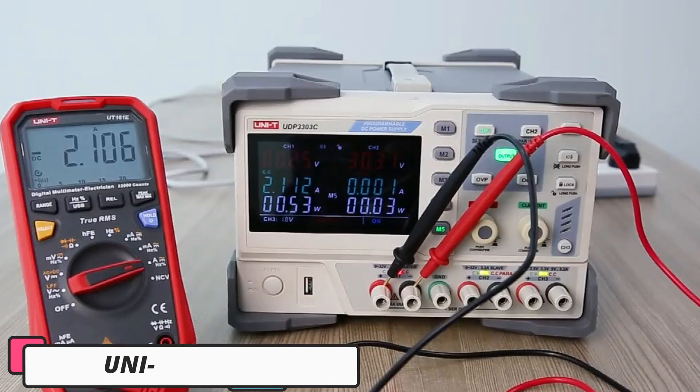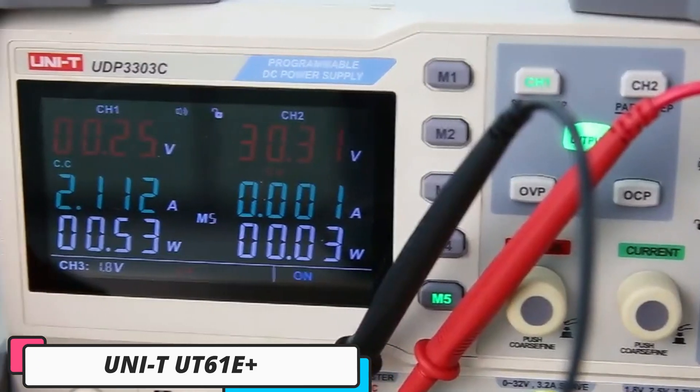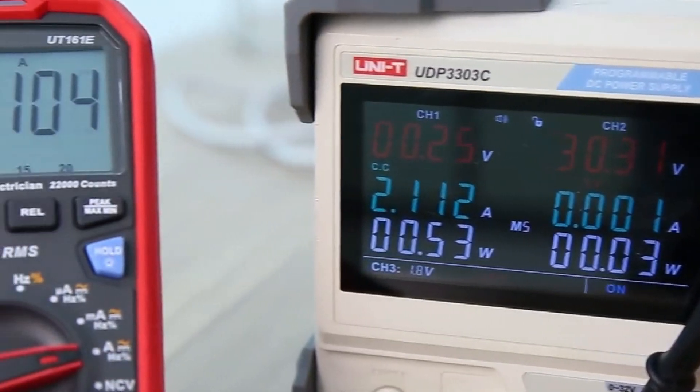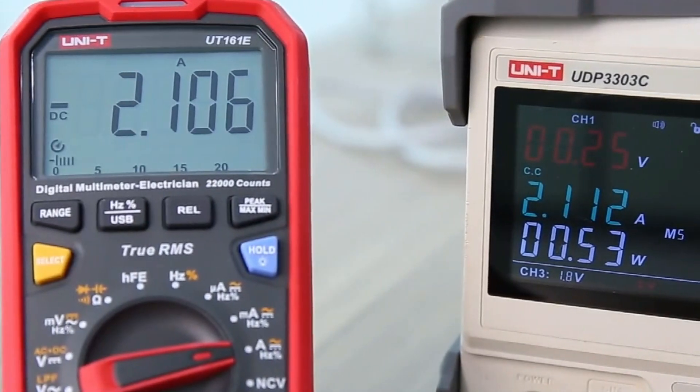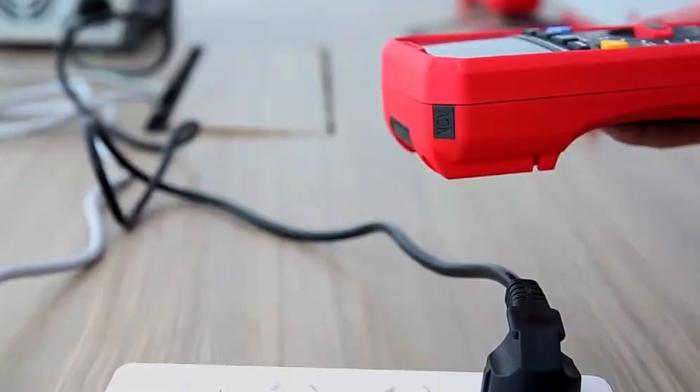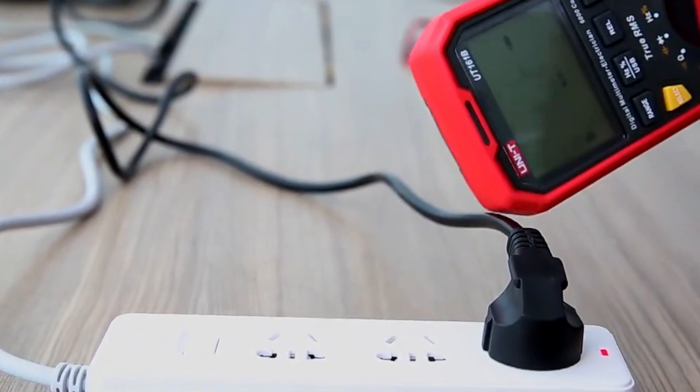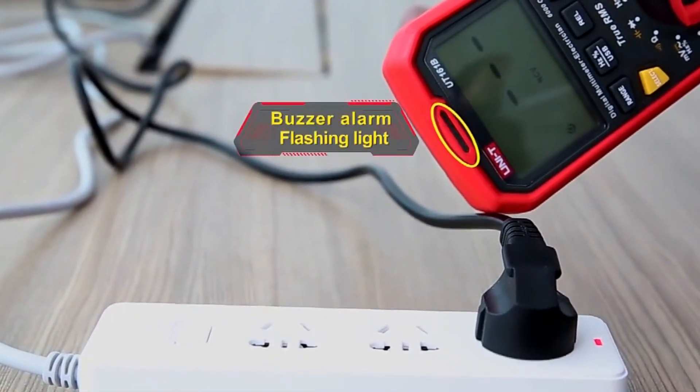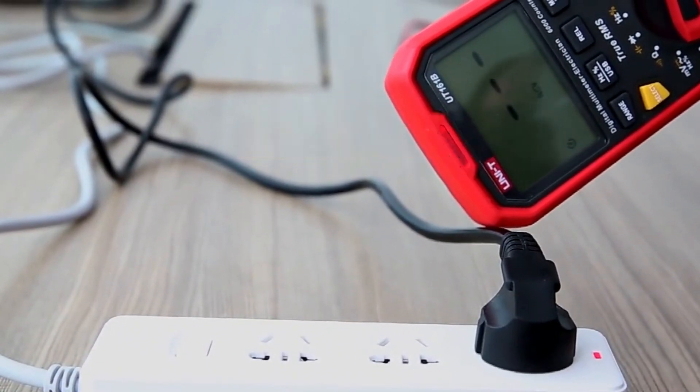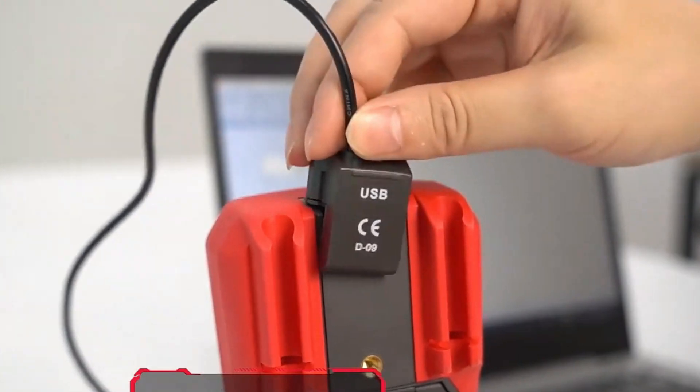Number 1. UNI-T UT61E. The UNI-T UT61E digital multimeter is a versatile tool for professionals and DIY enthusiasts in the electrical field. It offers true RMS measurement, ensuring accurate AC measurements even with complex waveforms.